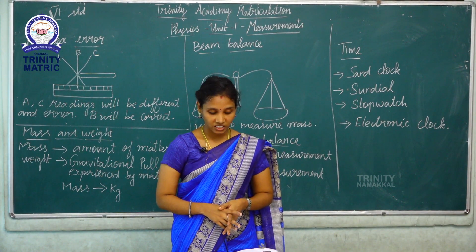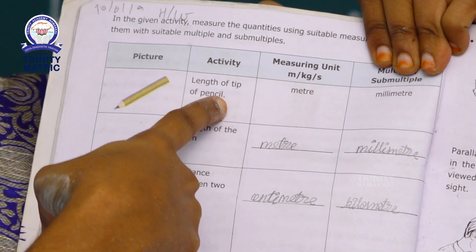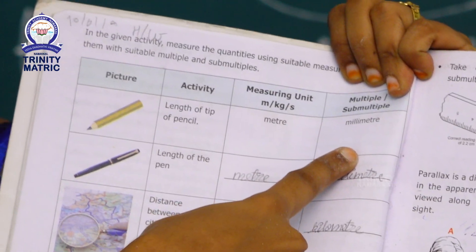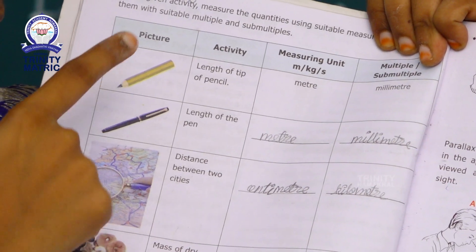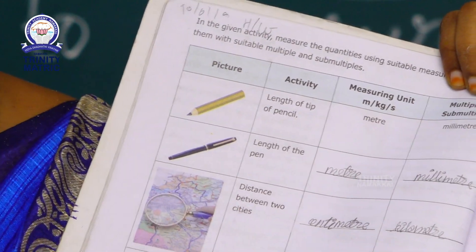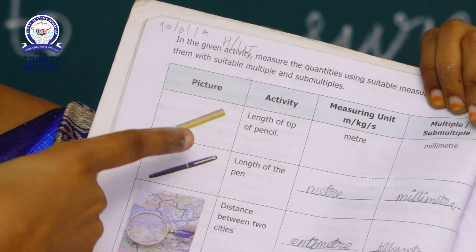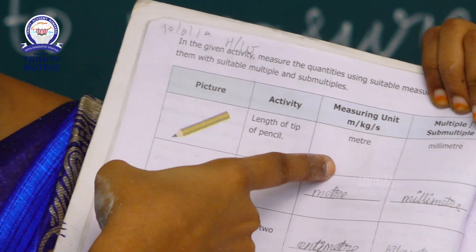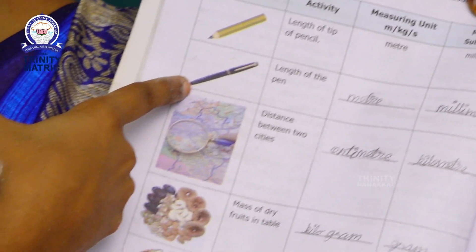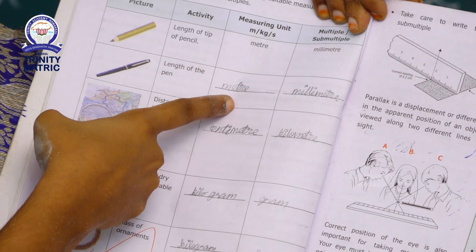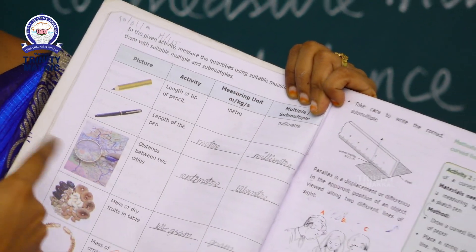Next we have to see one activity from the textbook. Pictures and activity: measuring units and multiples and submultiples values. First picture — pencil. Length of the tip of the pencil — measuring unit: meter, sub-multiple value: millimeter. Second one — length of the pen — measuring unit: meter, sub-multiple value: millimeter.